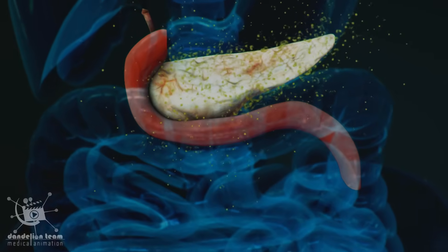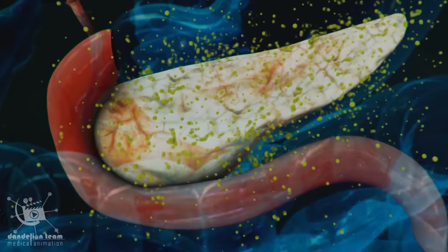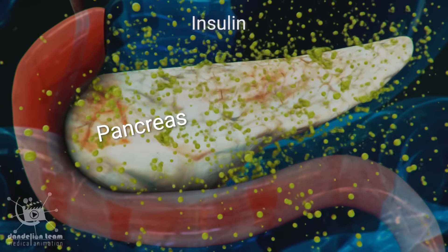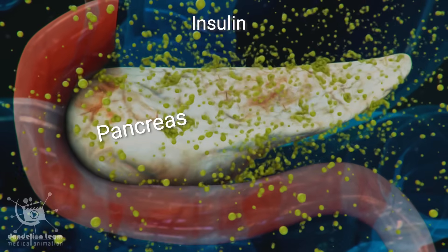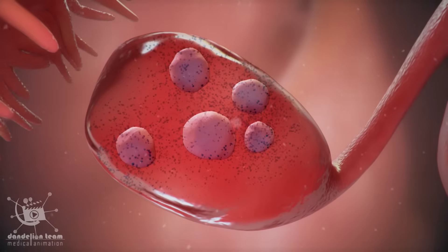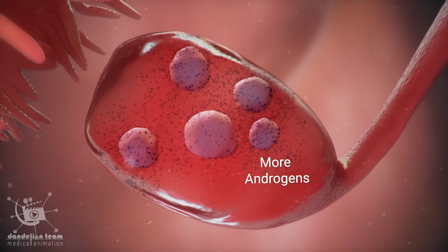Insulin also plays a vital role in PCOS. It is released from the pancreas. Insulin can affect the theca cells of the ovary and cause even more androgen release.